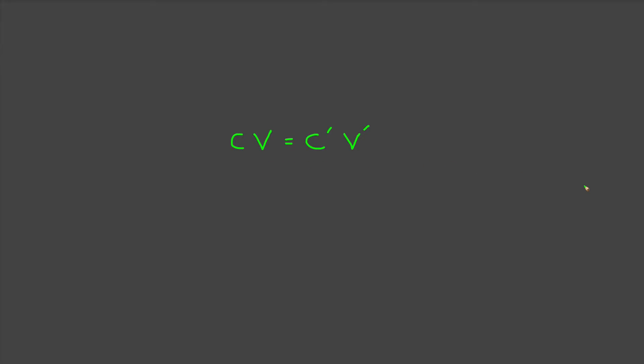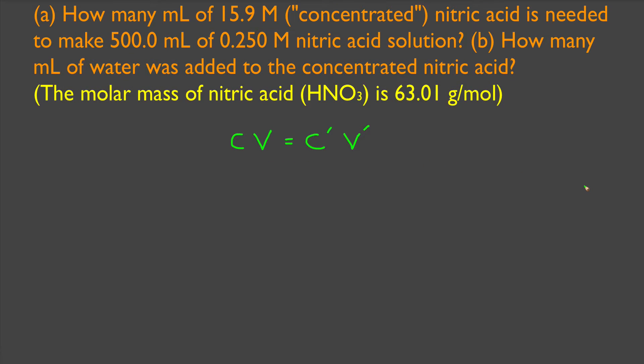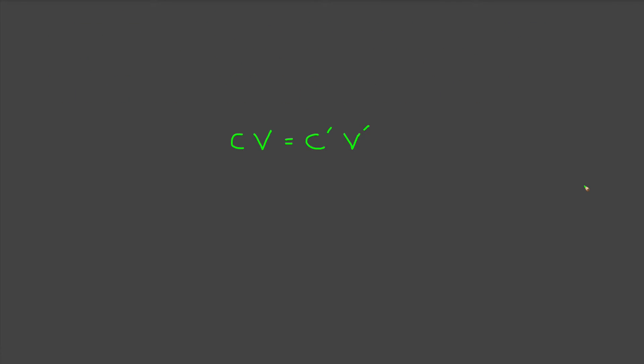A typical problem might look something like this. How many milliliters of 15.9 molar concentrated nitric acid is needed to make 500 milliliters of 0.25 molar nitric acid solution? And how much water was actually added to the concentrate to make that final sample? We can recognize from the way the question is worded that all that is changing in this sample is that water is being added to a concentrate. So let's set it up.